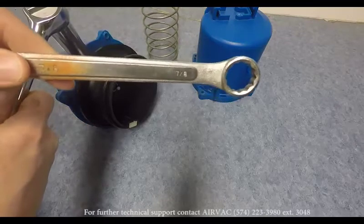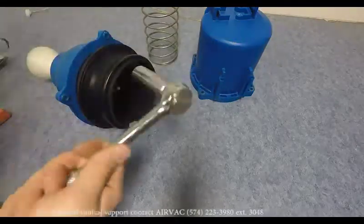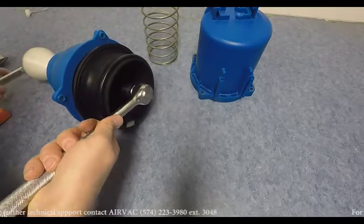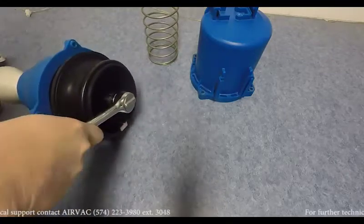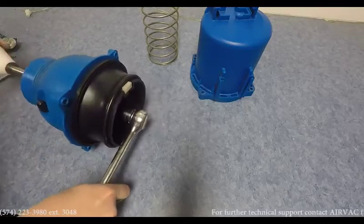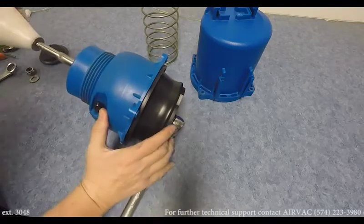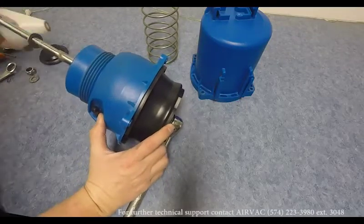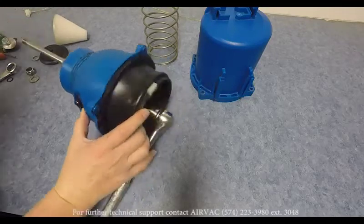Using a 7 eighths deep well socket and wrench, remove the 2 nuts from both ends of the shaft. Once the nut is off, remove the washers, plunger, o-ring, rubber seat, and retaining washer and set aside.